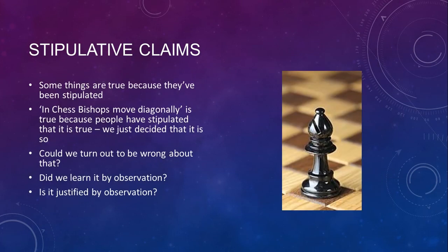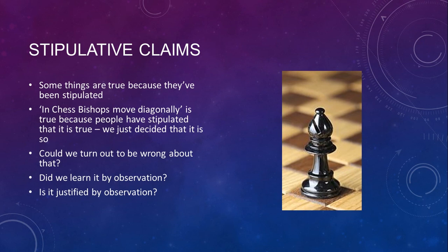Another class of claims that don't need justification from experience are stipulative claims. In chess, 'bishops move diagonally' is true because people said it's true — we didn't discover that empirically. If people started using bishops differently, that wouldn't prove bishops can move non-diagonally; you'd just say they're playing chess wrong. Could it turn out we were wrong? Not really — you can change the rules, but that's just a new stipulation. We didn't discover that bishops move diagonally by investigating the world; we just decided.